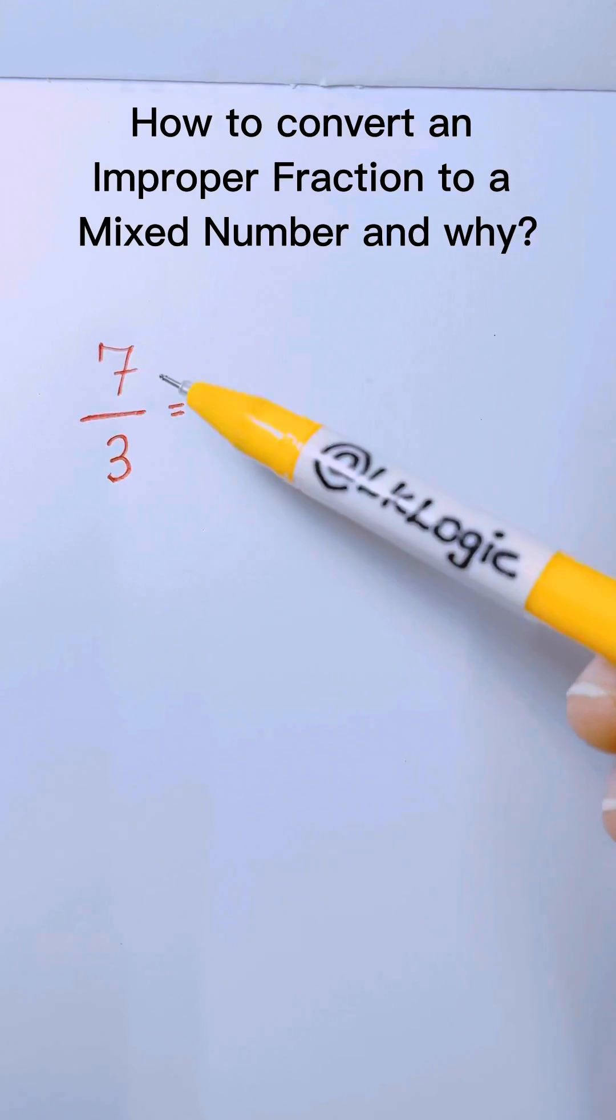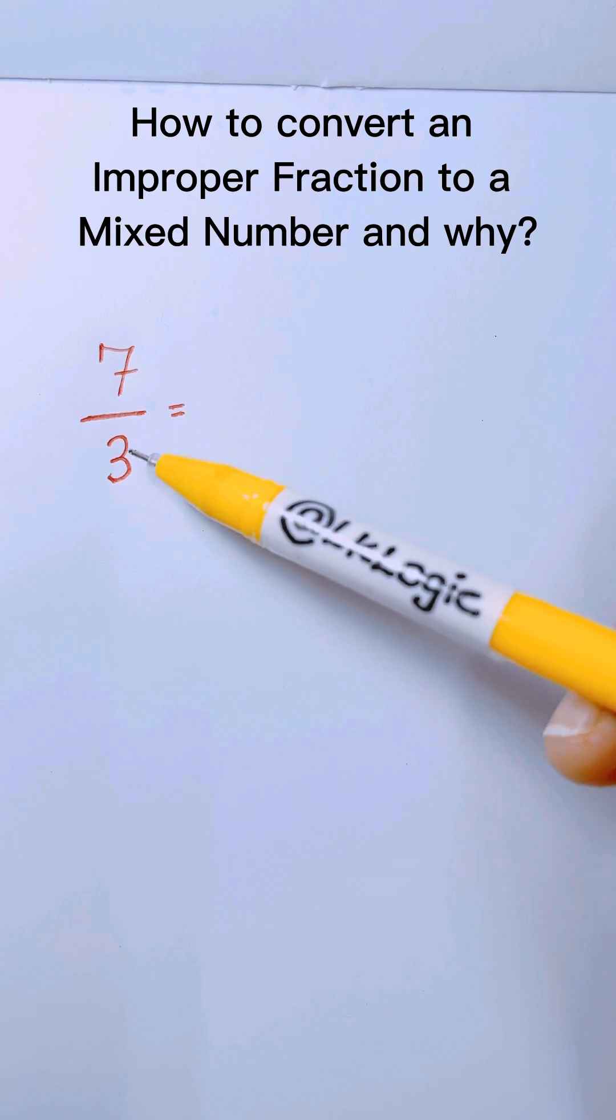How to convert an improper fraction to a mixed number? Well, all you have to do is take the numerator and divide by 3.